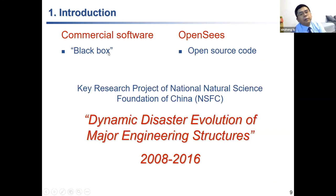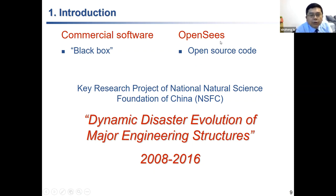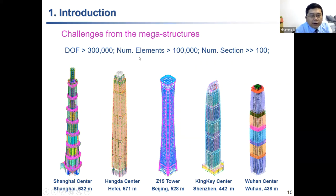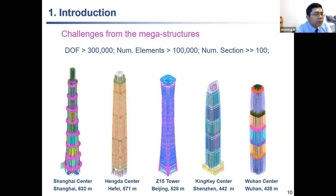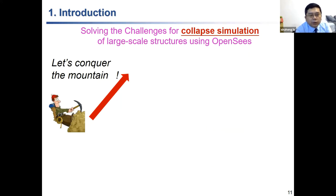The former simulations were generally based on commercial software — a black box where many internal technologies are unknown. The National Science Foundation of China set up a major project for more than eight years to understand the detailed mechanism of this simulation. We wanted to use open-source code to understand the detailed behavior, so we turned to OpenSees. The challenge was significant: at that time in 2012–2013, the degree of freedom count, number of elements, and number of sections were much bigger than models we read about in OpenSees papers. The task: simulate collapse of large-scale structures using OpenSees.